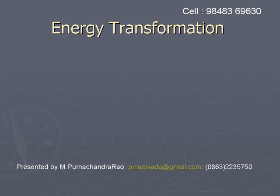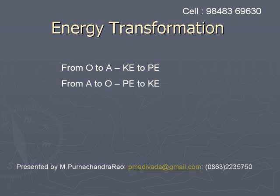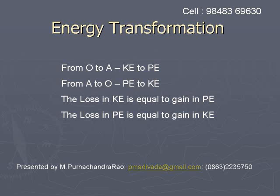Energy transformation: as the particle in simple harmonic motion moves, its energy is continuously transformed from one form to the other — from kinetic to potential and from potential to kinetic. From O to A, energy transforms from kinetic energy to potential energy. When the particle is at O it has all energy as kinetic energy, and as it moves to A the energy is converted to potential energy. From A to O, potential energy is converted back to kinetic energy. The loss in kinetic energy equals the gain in potential energy, and the total energy remains constant at any point.